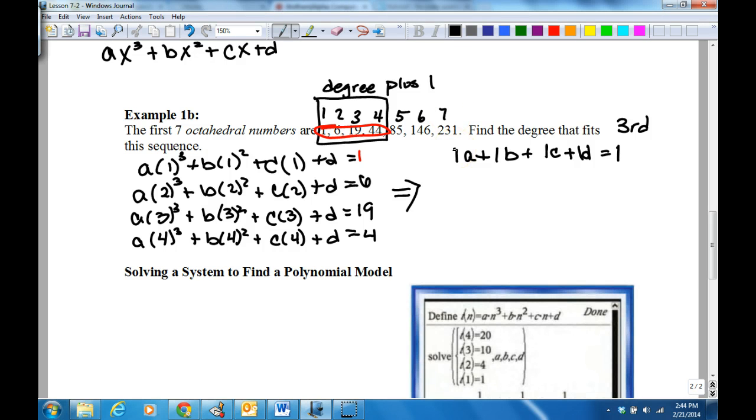The second one will be 2 to the third, which is 8, plus 4b plus 2c plus 1d equals 6. I'm just simplifying it. I'm getting these from over here. See, 2 to the third is 8, 2 to the second is 4.